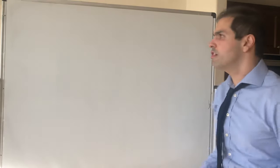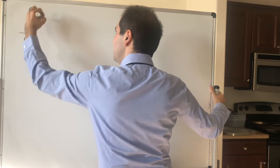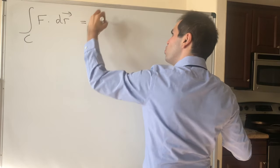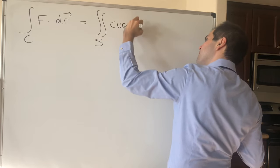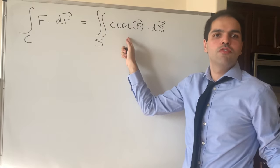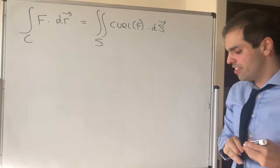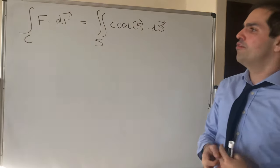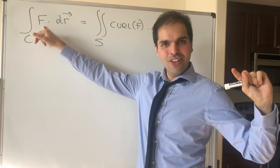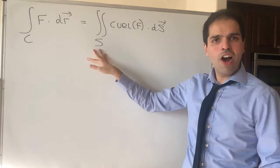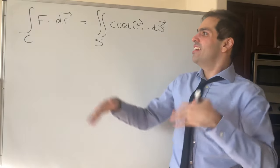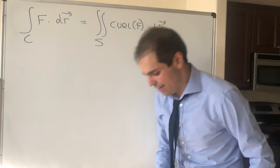So what does Stokes' Theorem say? It says that the line integral of f — the stuff we want to calculate — is just the same as the surface integral of the curl of f. In other words, the integral of a function is the same as the double integral of a derivative, like the fundamental theorem of calculus. The line integral, an easy integral of a complicated function, becomes a surface integral — a complicated integral of an easy function. This is the yin-yang of math: easy of hard becomes hard of easy.